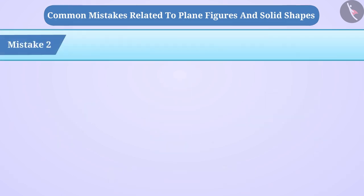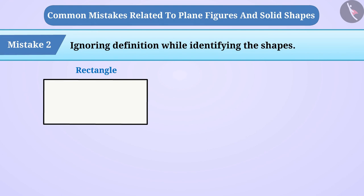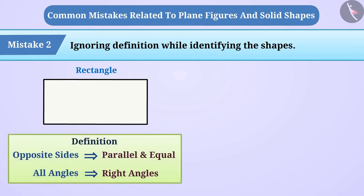Mistake 2. Ignoring definition while identifying the shapes. If we show a rectangle to children and tell them its definition, then many times they remember the shape but ignore the definition.